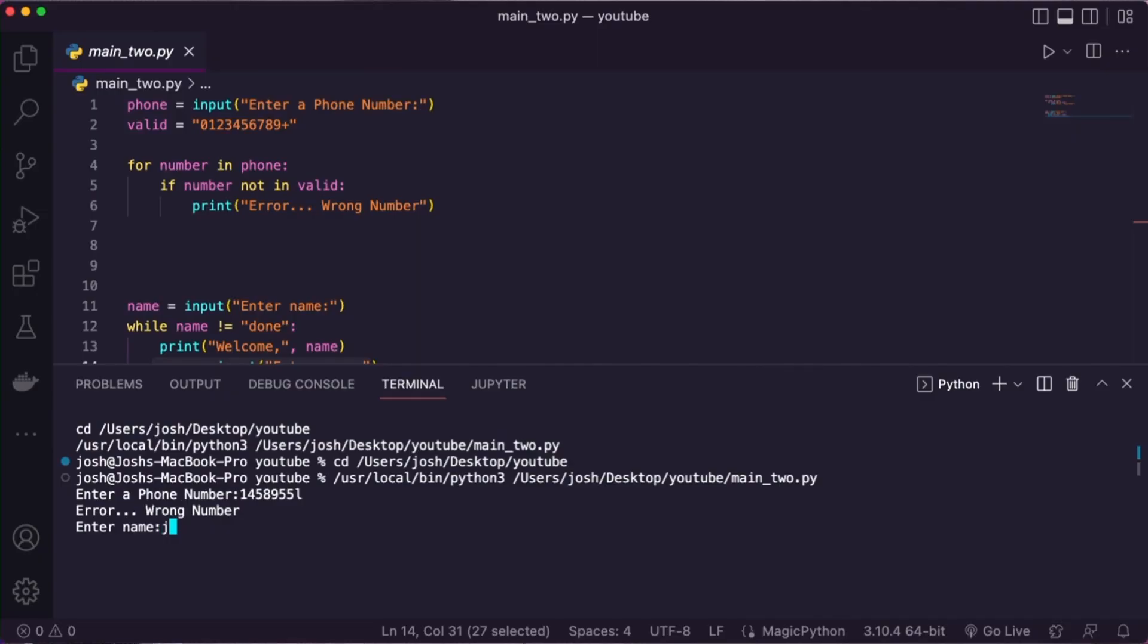For name, let's start off with Josh. Okay. Enter another name. Bob. Okay. Enter another name. Done. Ah. My loop stopped. That's how loops can work.